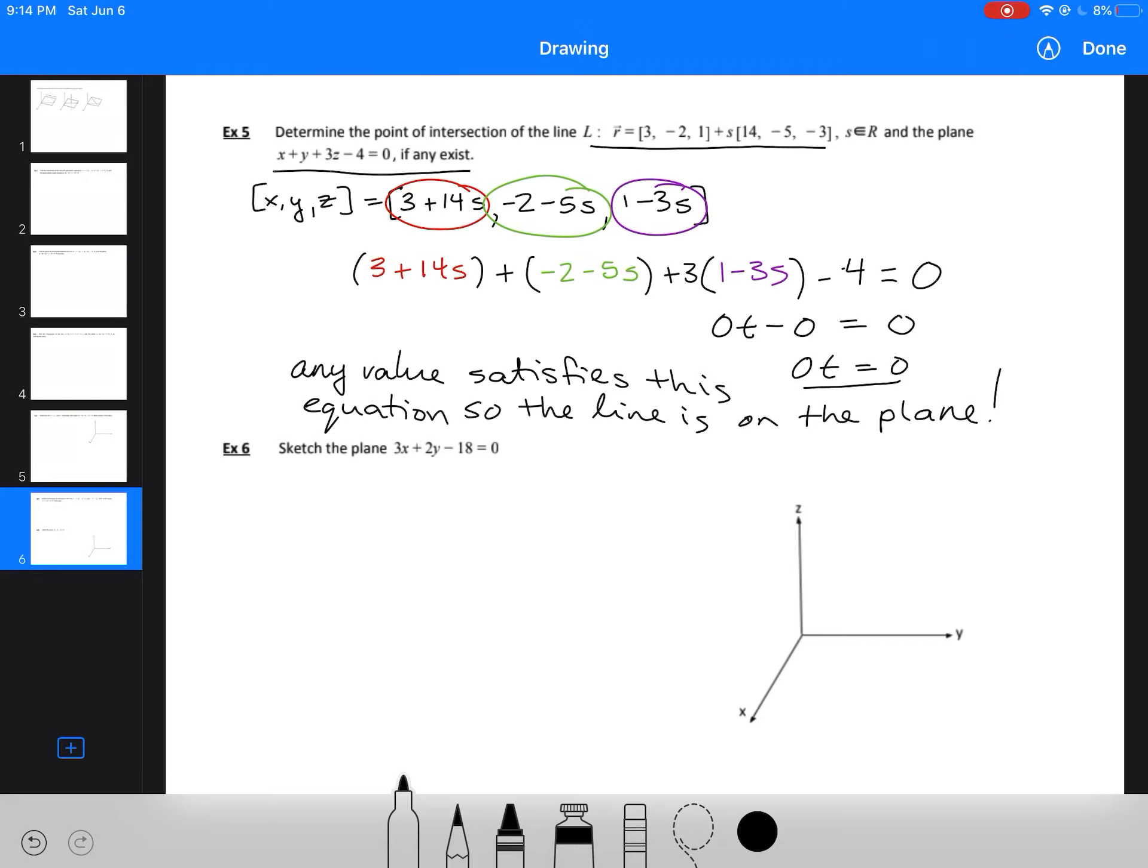The last one is another sketch of a plane. Let's do 3x + 2y - 6z - 18 = 0. To sketch the plane, just like in Example 4, we need to find the intercepts. For the x-intercept, we set y and z equal to zero. So 3x + 2(0) - 6(0) - 18 = 0. We get 3x = 18, x = 6, which means our x-intercept is (6, 0, 0).